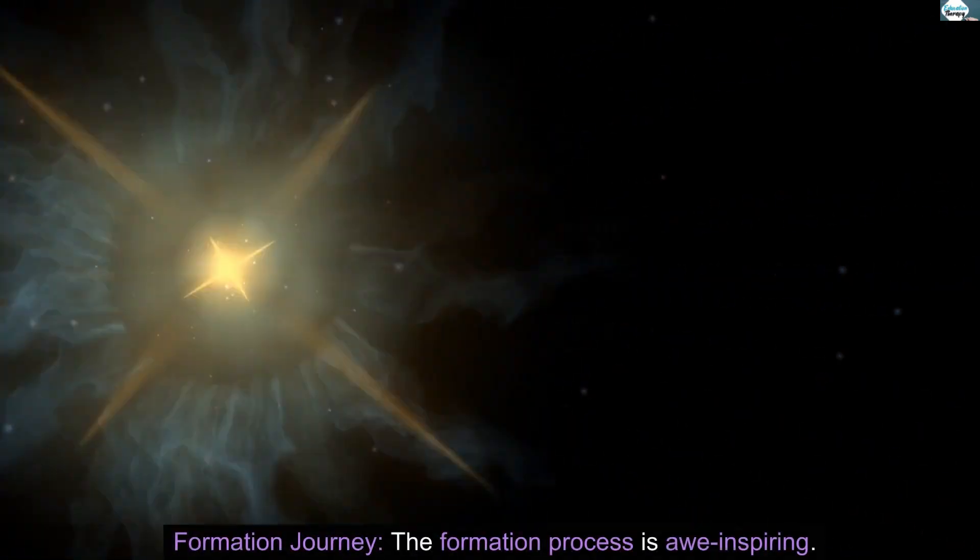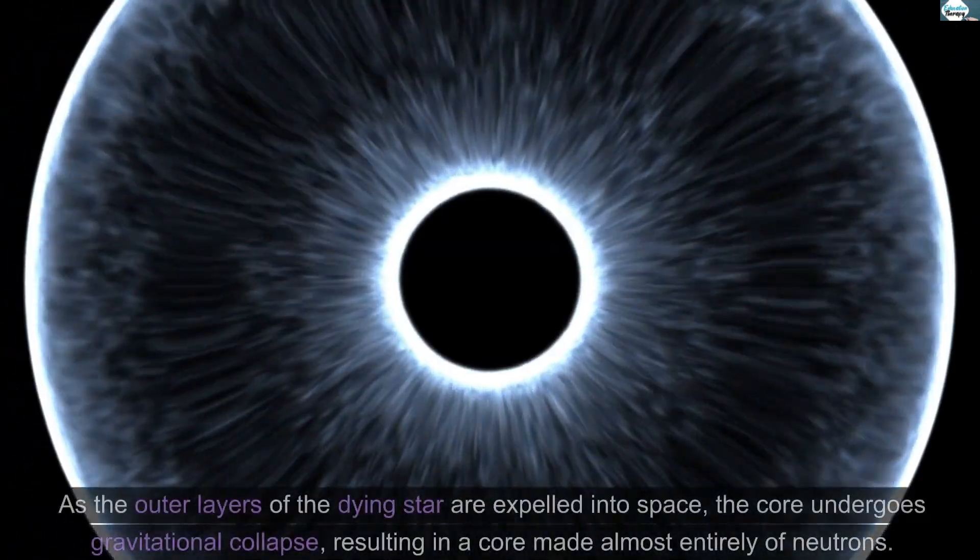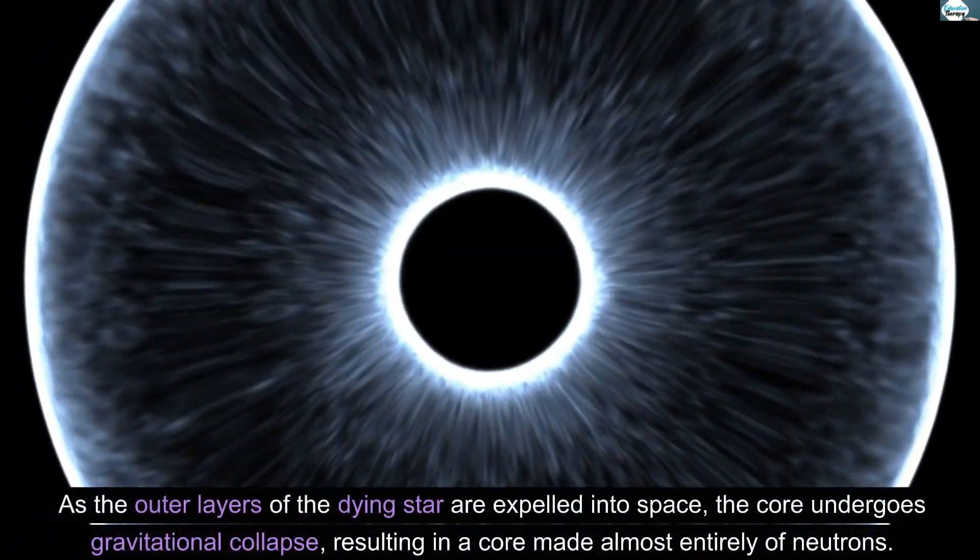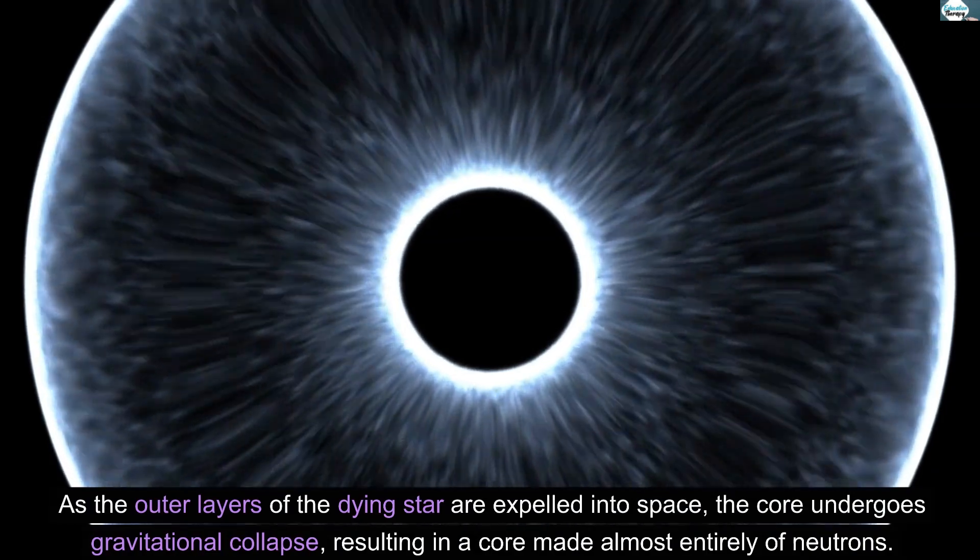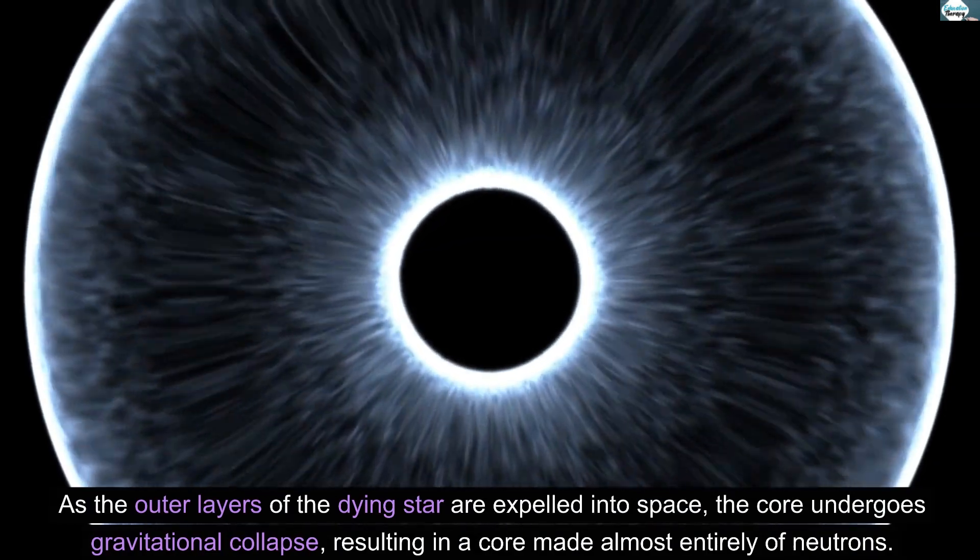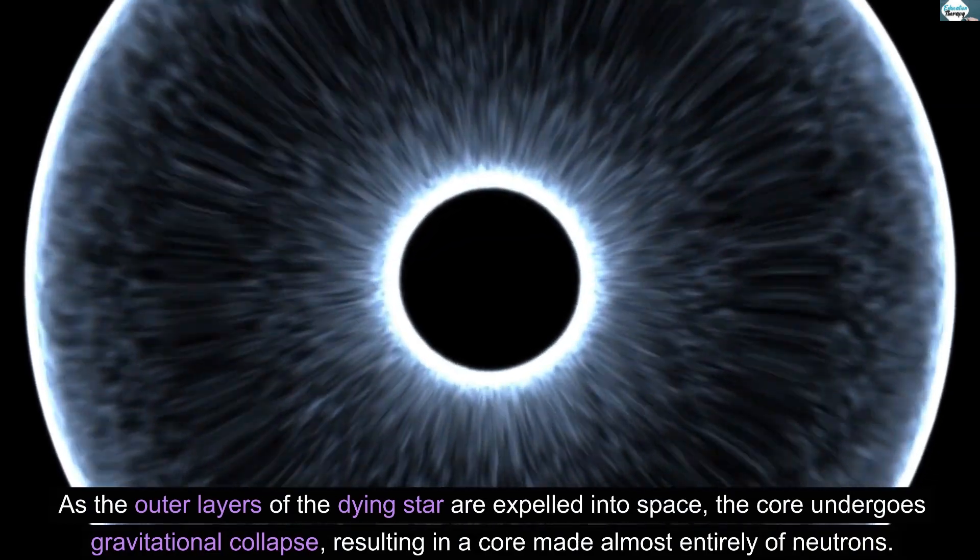Formation journey. The formation process is awe-inspiring. As the outer layers of the dying star are expelled into space, the core undergoes gravitational collapse, resulting in a core made almost entirely of neutrons.